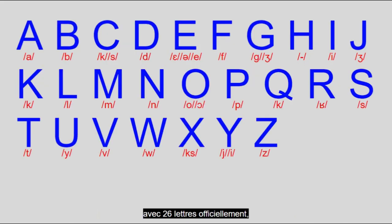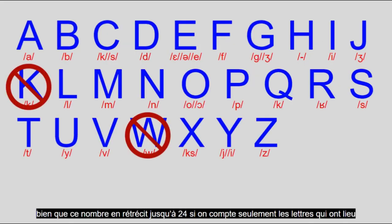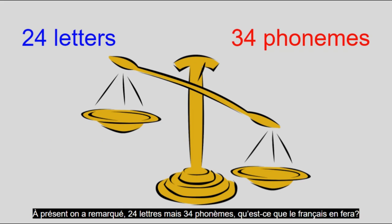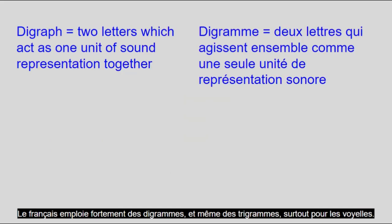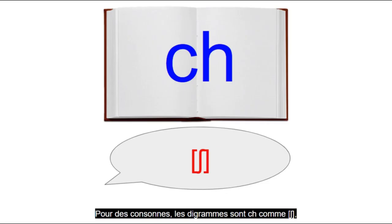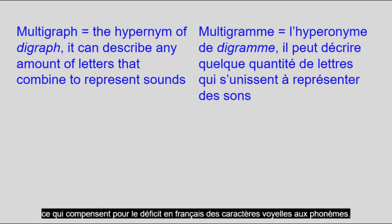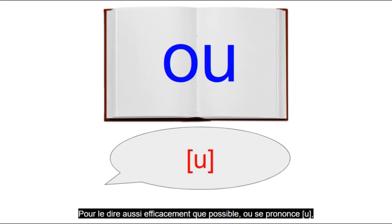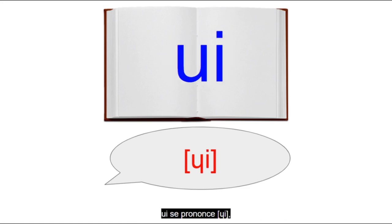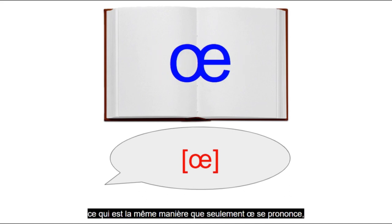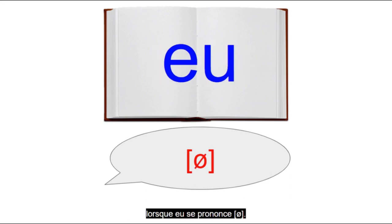French uses its own version of the Latin alphabet with officially 26 letters, although that number shrinks to 24 if you only count letters occurring in native French words, as K and W are only found in loan words. Of those 24 letters, there are 5 vowels, 18 consonants, and 1 letter that can be either. By now you've noticed 24 letters but 34 phonemes — what will French do about it? French makes heavy use of digraphs and even trigraphs, especially in vowels. In consonants, the digraphs are CH as /ʃ/, PH as /f/, and GN as /ɲ/. In vowels, there are a lot of multigraphs: OU is pronounced /u/, OI is pronounced /wa/, UI is pronounced /ɥi/, certain combinations are pronounced /e/ and others /o/. There's also EAU pronounced /o/, and EI pronounced /ɛ/.